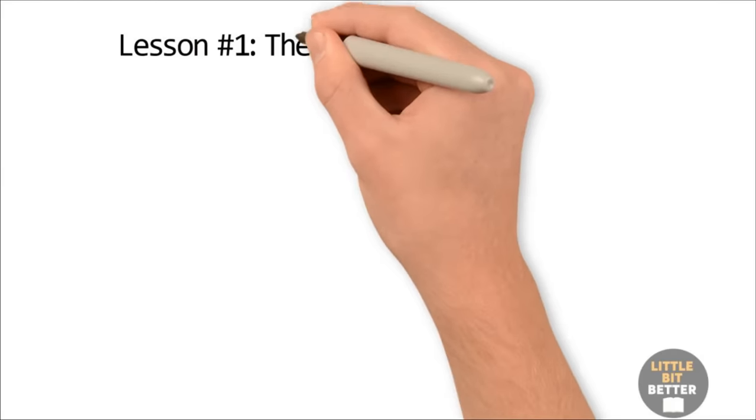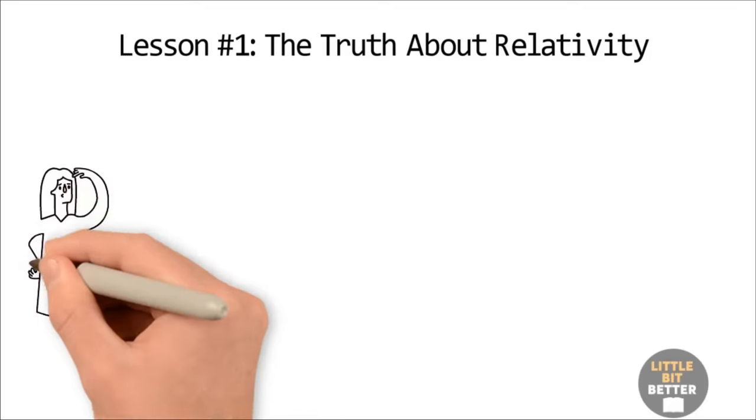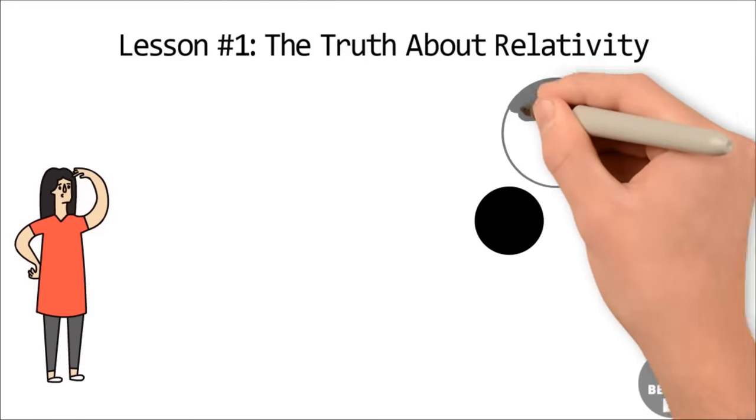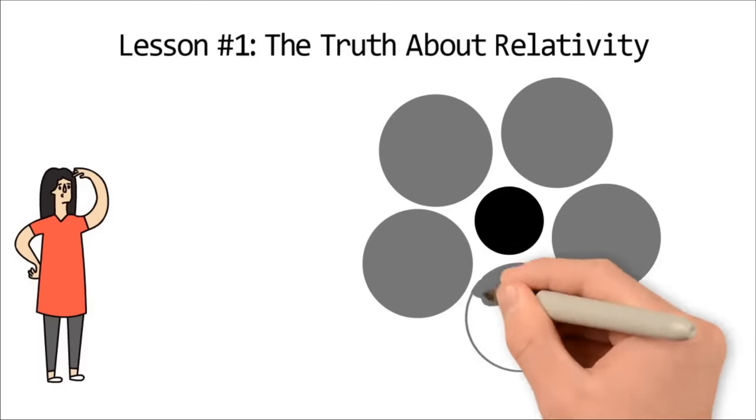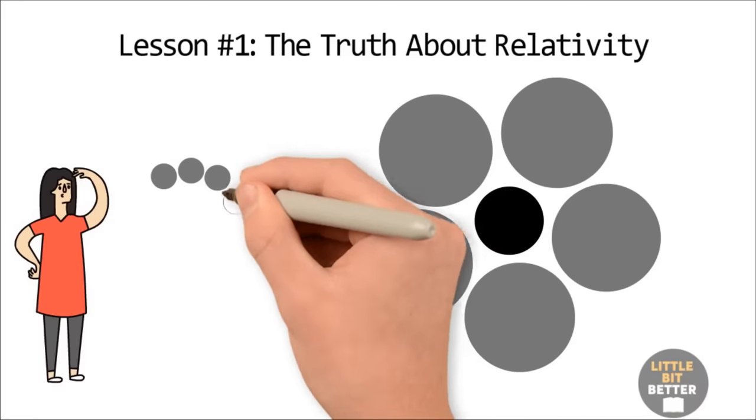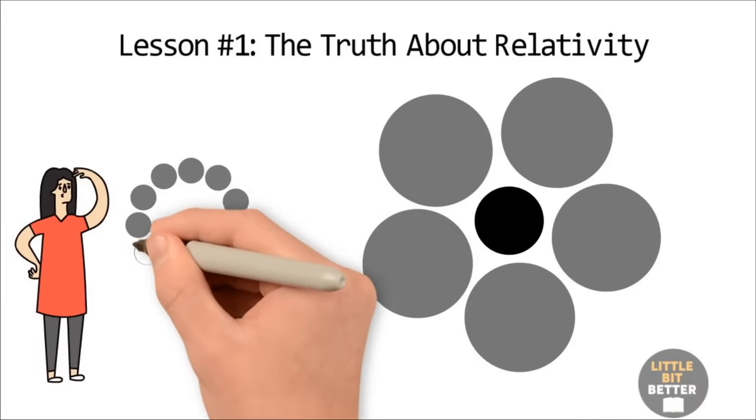Lesson number one, the truth about relativity. Ariely explains that all things are relative, even when they shouldn't be, and that relativity plays an essential role in decision-making in everyday life.